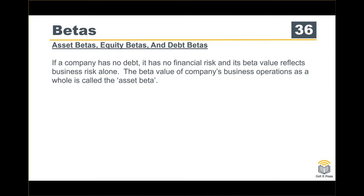For asset beta, it shows the business risk alone. So if the company has no debt, the equity beta is the same as the asset beta.